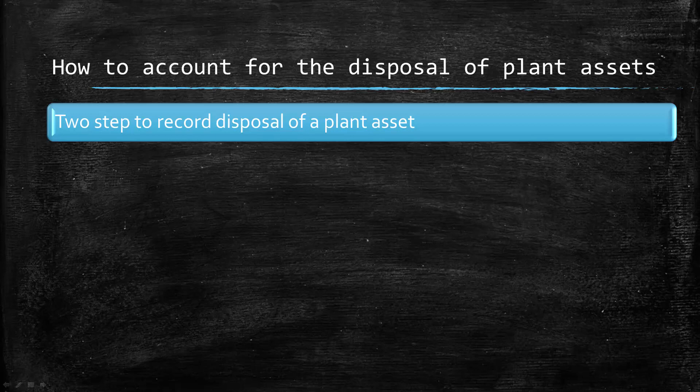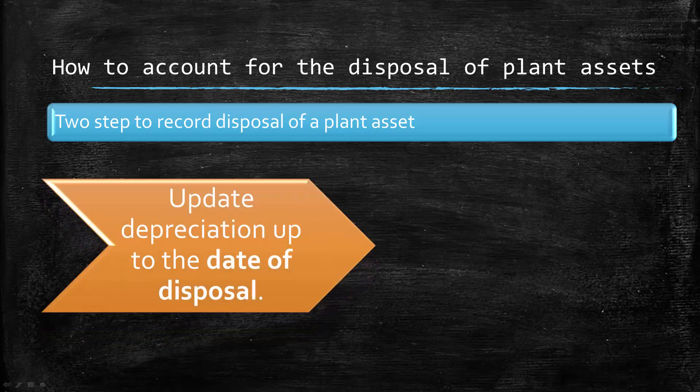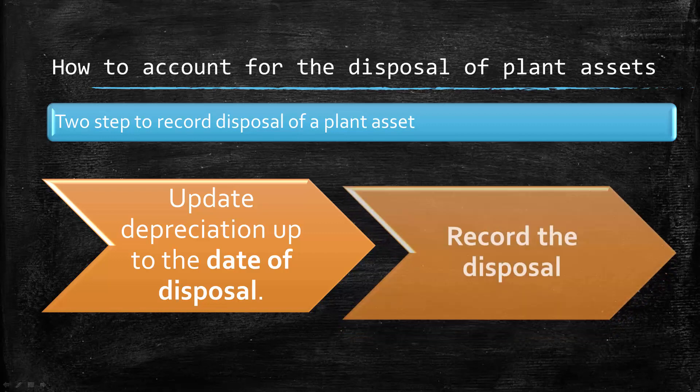When we're accounting for the disposal of plant assets, there are two steps that we need to follow. The first thing we need to do is to update depreciation on that asset all the way up until the date of disposal. The second thing we need to do is to record the actual disposal of that asset.